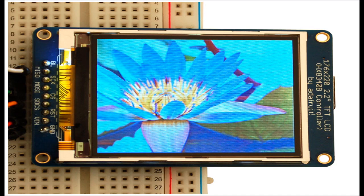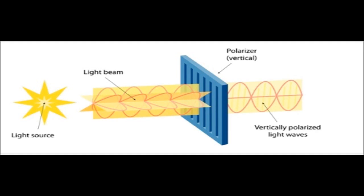LCDs have some light source behind the screen that creates the light for the display. When light is generated from a light source, it comes out in all directions with no organization.